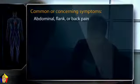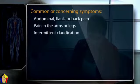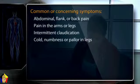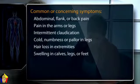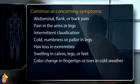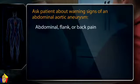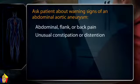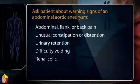Common or concerning symptoms relating to the peripheral vascular system include abdominal, flank, or back pain; pain in the arms or legs; intermittent claudication — any pain or cramping in the legs during exertion relieved by rest within 10 minutes; cold, numbness, or pallor in the legs; hair loss in the extremities; swelling in the calves, legs, or feet; color change in the fingertips or toes in cold weather; and swelling with redness or tenderness. Ask about abdominal, flank, or back pain especially in older smokers, and about unusual constipation, distention, urinary retention, or renal colic, as these symptoms can suggest an expanding hematoma from an abdominal aortic aneurysm.